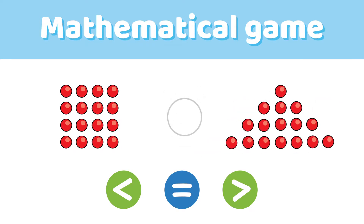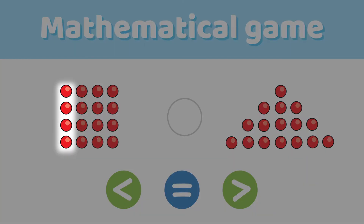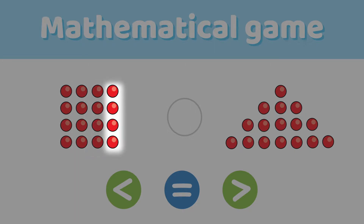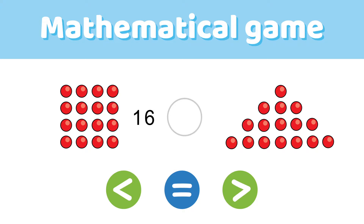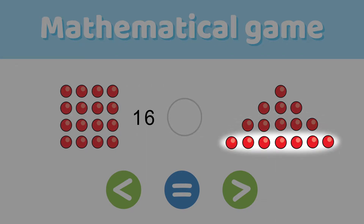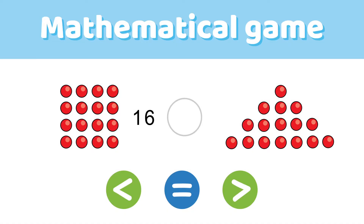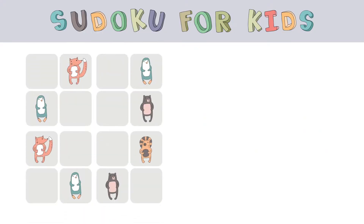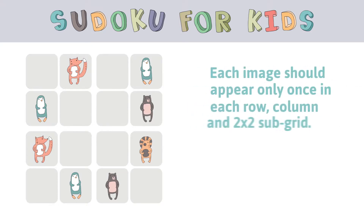This looks tough! Let's count on the left. Four plus four is eight, plus four is twelve, plus four is sixteen. We have sixteen items on the left. Let's count on the right: one plus three is four, plus five is nine, plus seven is sixteen. We have sixteen items on the right. Sixteen equals sixteen. Well done!